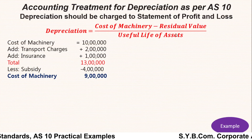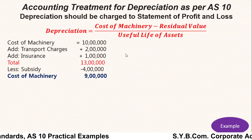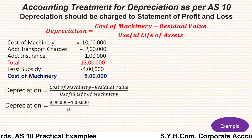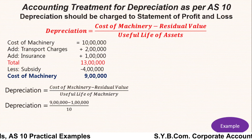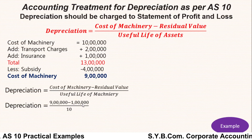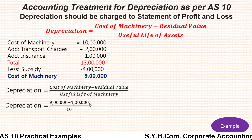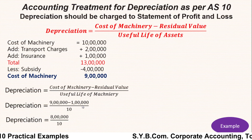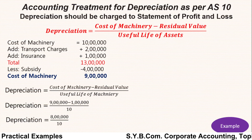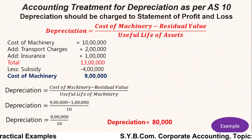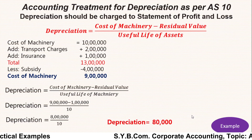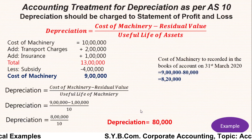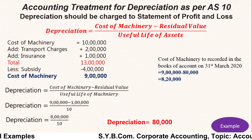Applying the formula: Depreciation = (Cost − Residual Value) ÷ Useful Life = (9 lakh − 1 lakh) ÷ 10 = 8 lakh ÷ 10 = rupees 80,000. So the annual depreciation amount is rupees 80,000. The cost of machinery to be recorded in the books of accounts on 31st March 2020 will be 9 lakh minus 80,000.